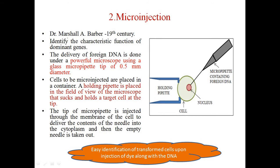Microinjection was first invented by Barber in the 19th century to identify characteristics of a dominant gene. A powerful microscope is used along with a glass micropipette of 0.5 mm diameter. This micropipette contains the foreign DNA and is used to transfer the foreign DNA directly into the nucleus of the cell.